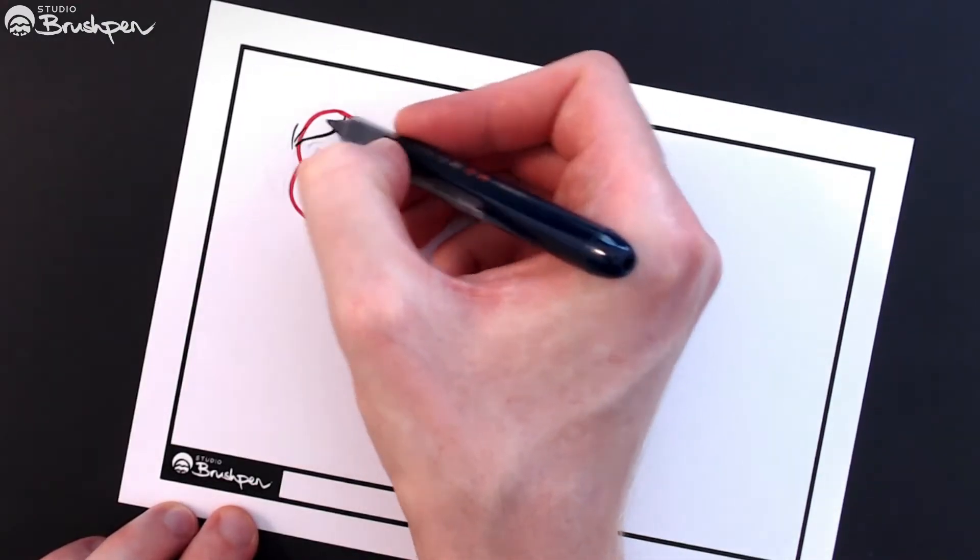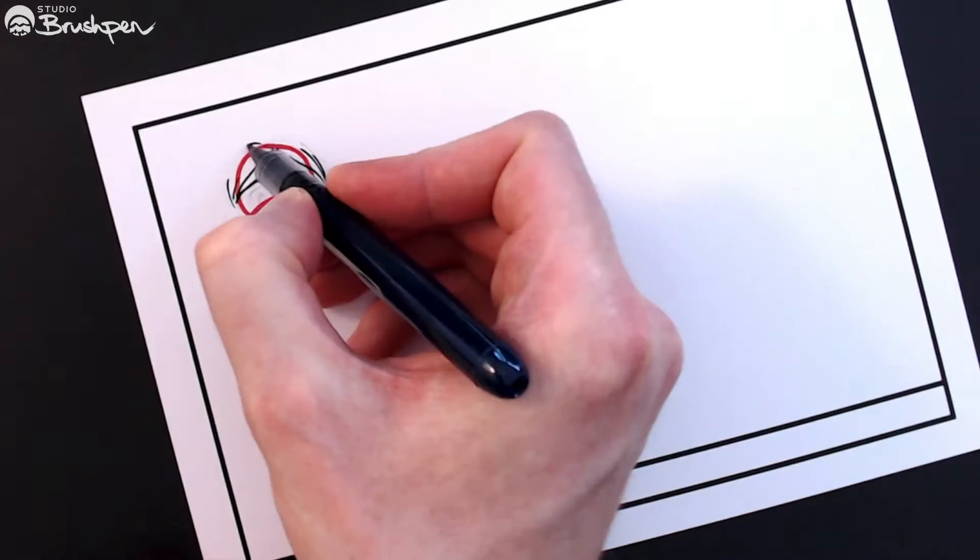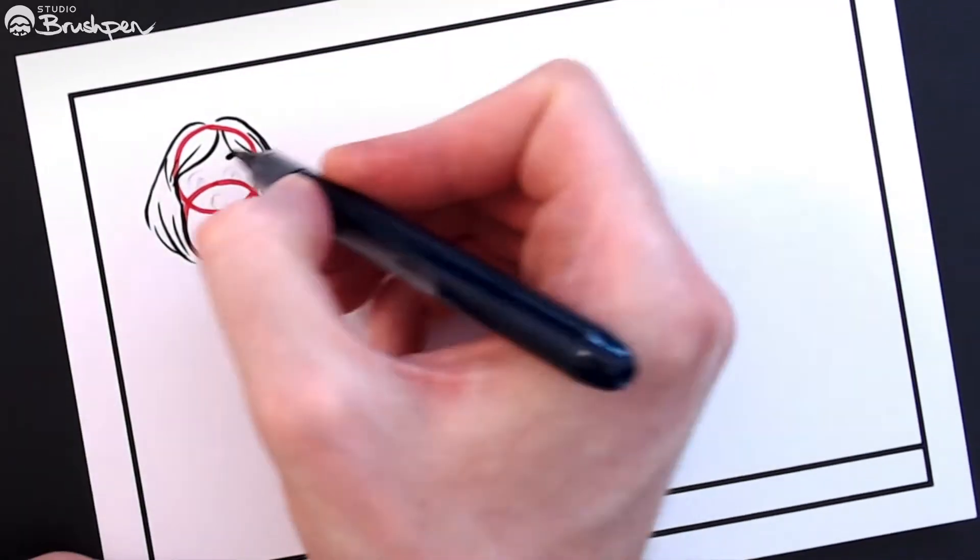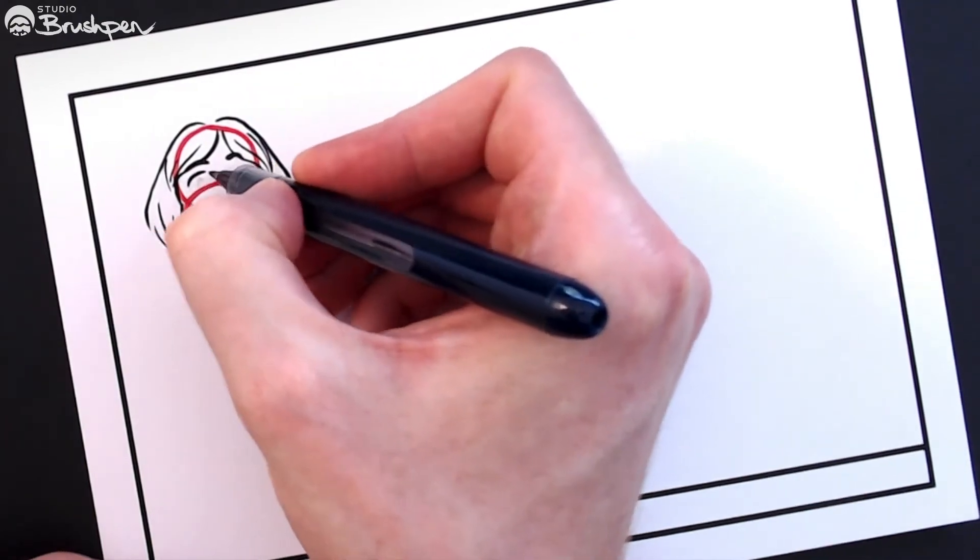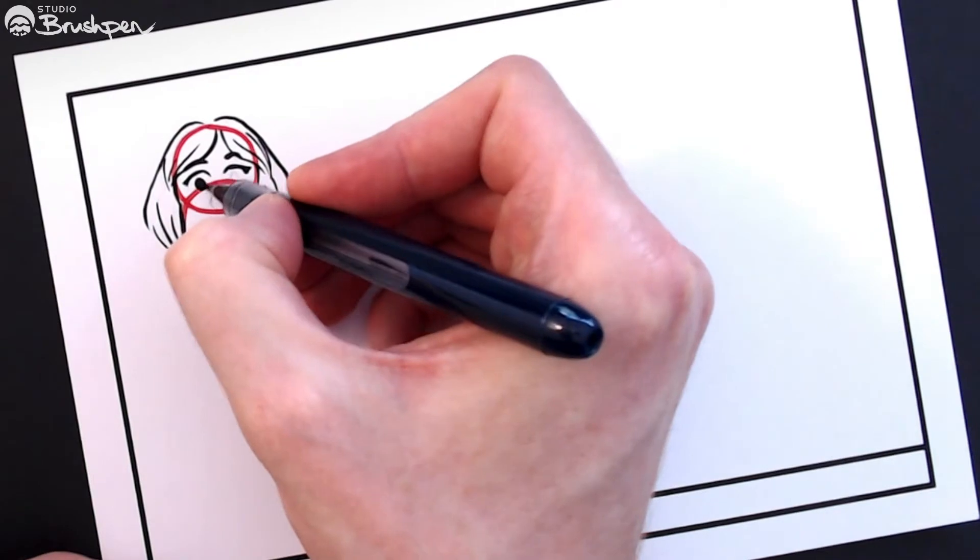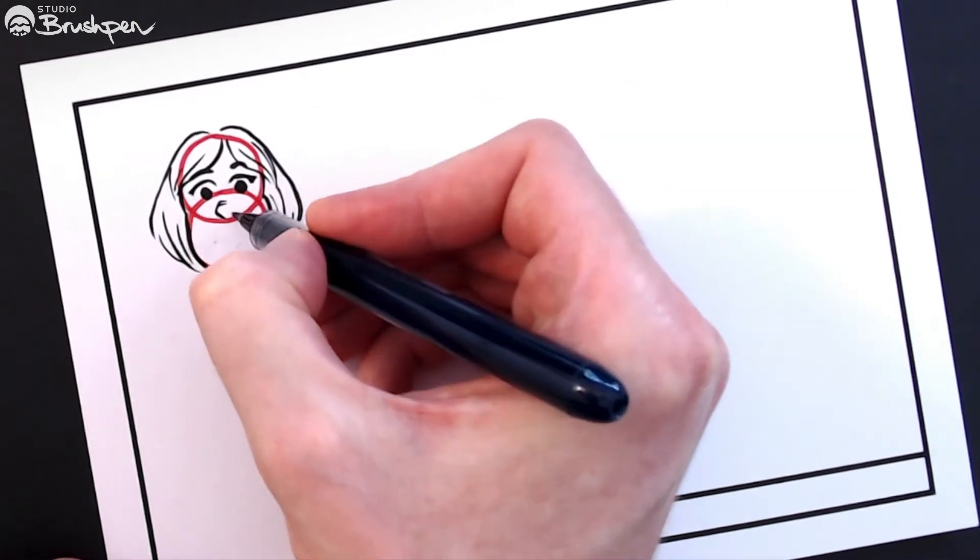In a video on character design I discussed using basic shapes to create faces. As you can see here, drawing two circles is the easiest way to make a simple face. But this face is quite neutral. So what can we do to make it more expressive while keeping the character recognizable?